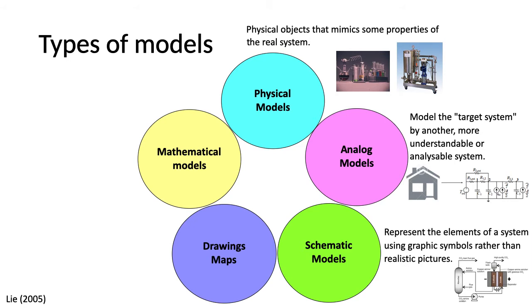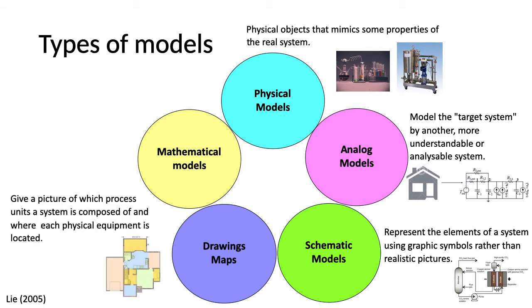Schematic models represent the elements of a system using graphic symbols rather than realistic pictures. Process drawings and maps give a picture of which process units a system is composed of and where each physical equipment is located.